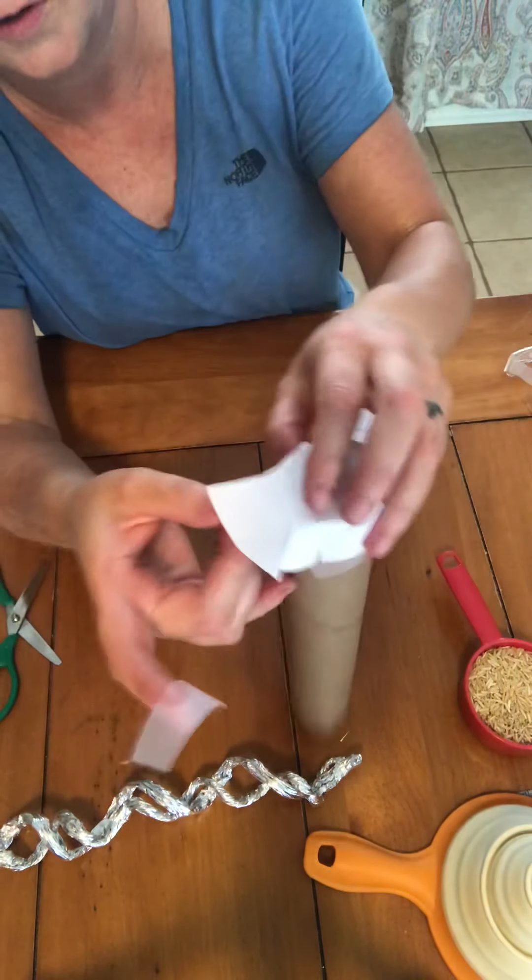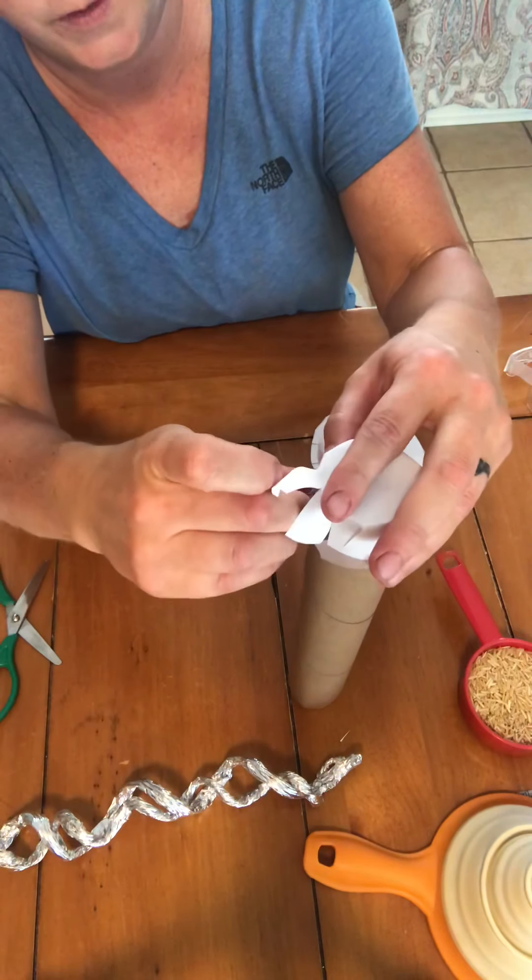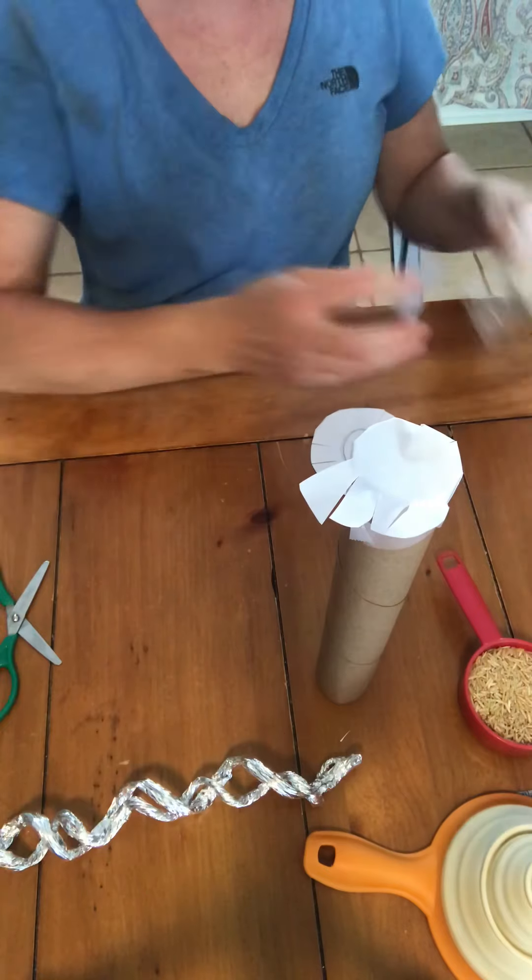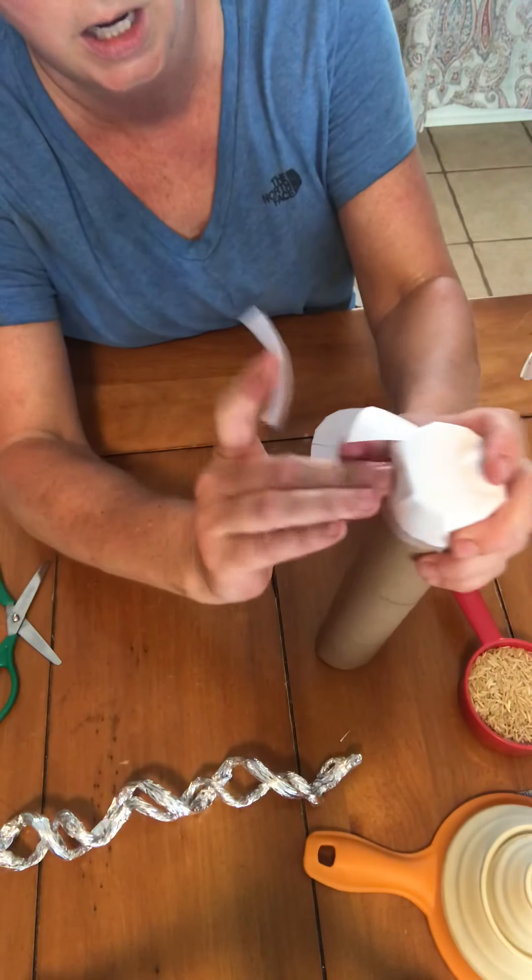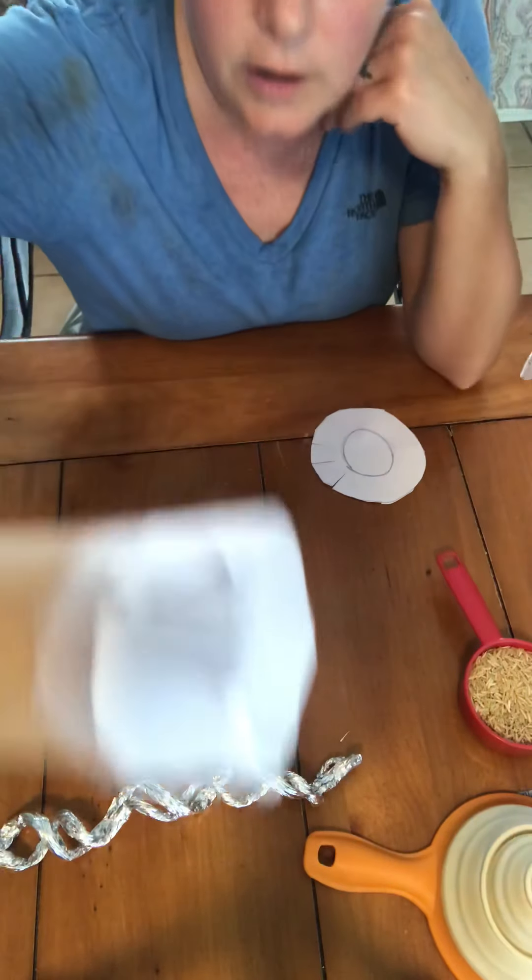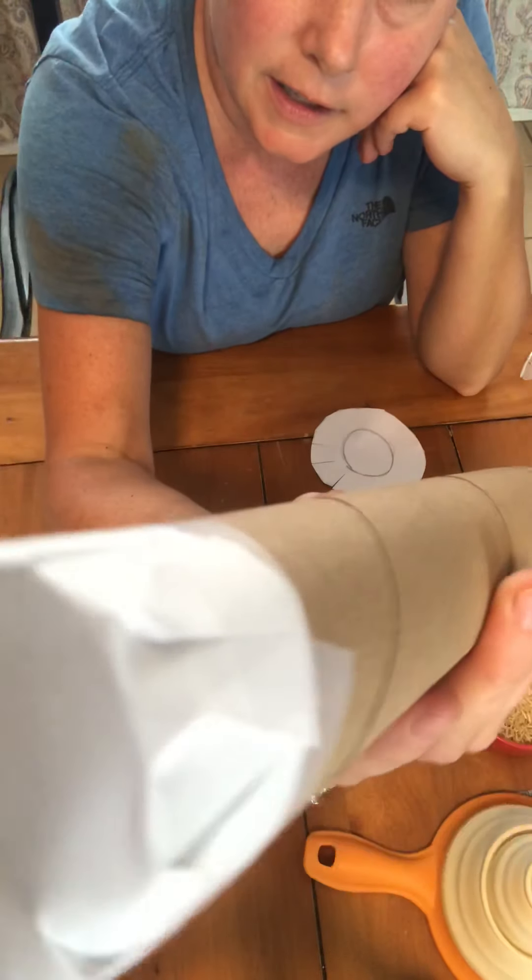Alright, so we're using just our little tape for that, fold those over just so we can get them to stick down and then we're going to put the bigger packaging tape on top. Alright, so we've got our little scotch tape roll here.